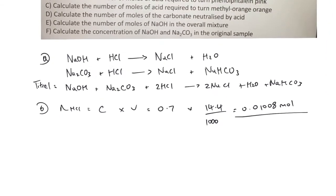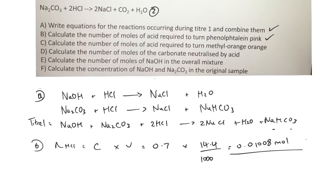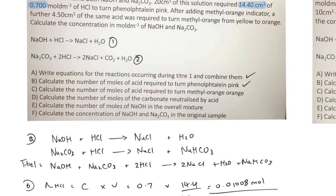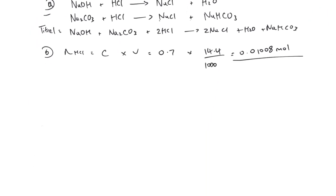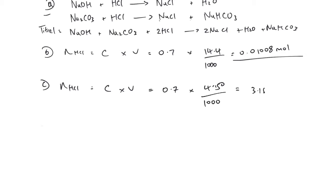Next, we calculate the number of moles of acid required to turn the methyl orange orange — looking at that second titration. A further 4.5 cm³ of the same acid concentration was required. Using C × V: moles of HCl = 0.7 × 4.5 ÷ 1000 = 3.15 × 10⁻³ moles.